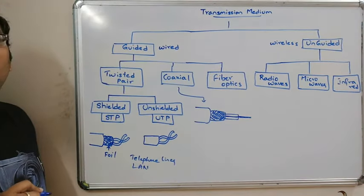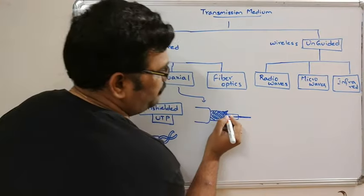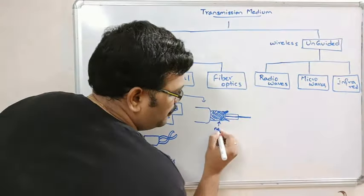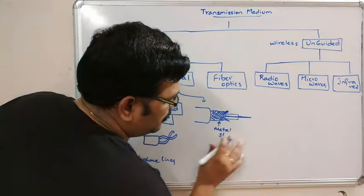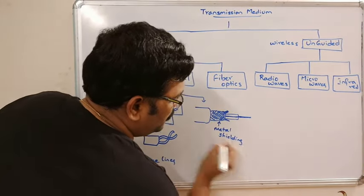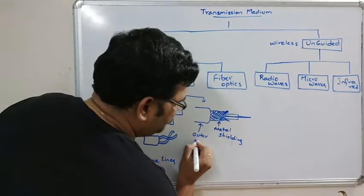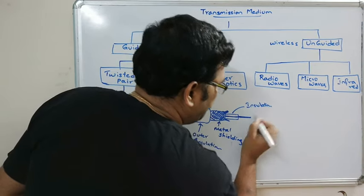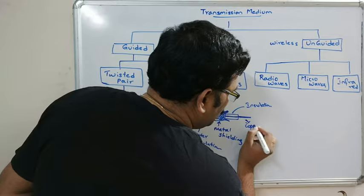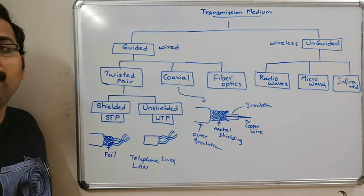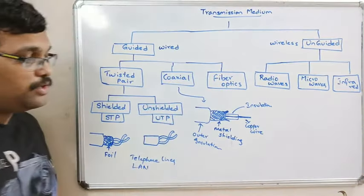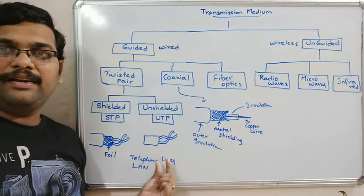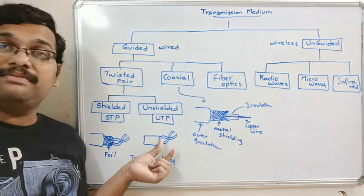This is a coaxial cable with metal shielding and outer insulation surrounding a central copper wire. Here we are reducing noise and crosstalk with the help of metal shielding, whereas in twisted pair we reduce noise by twisting the cables.